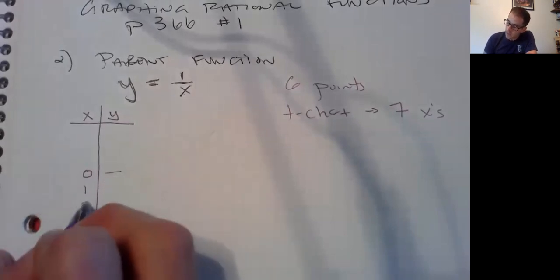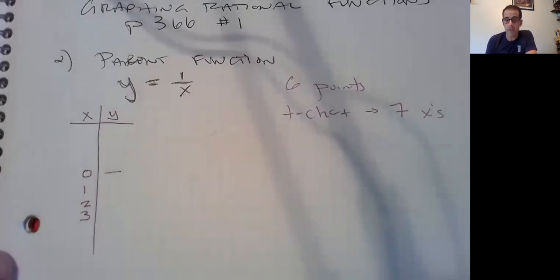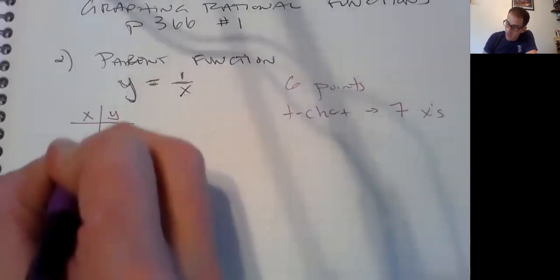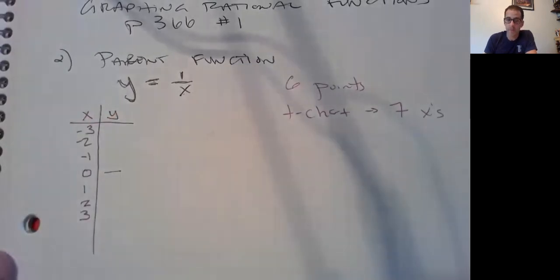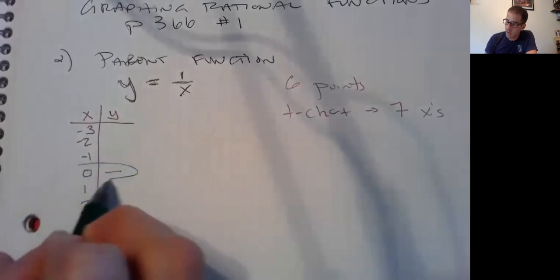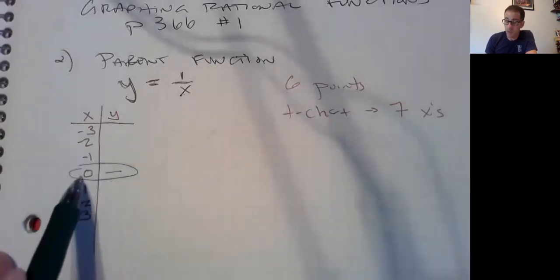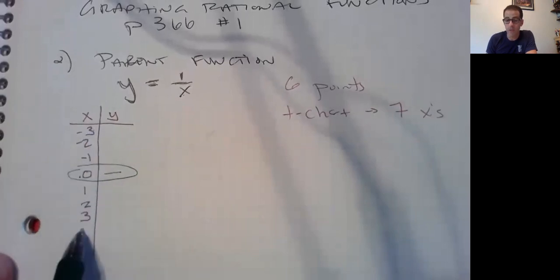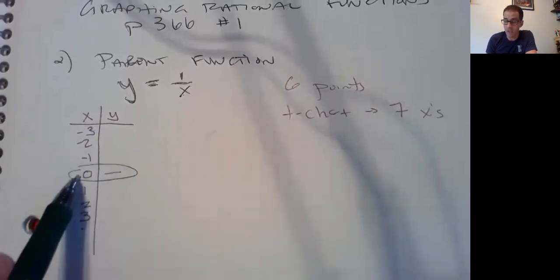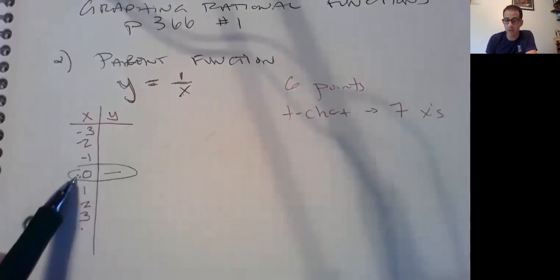We're gonna pick three numbers bigger than zero. The middle number, this is really your seventh. I wanted you to have six points: one, two, three, four, five, six. But your t-chart has to have seven x's. Here's your seven, the middle.